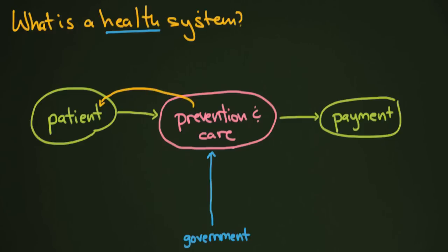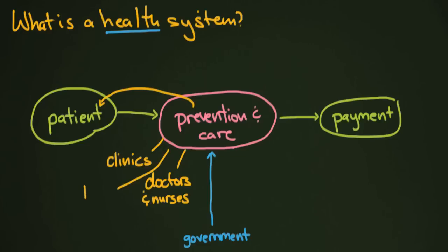Obviously you have doctors, clinics, and hospitals — you've always had those, so I'll include those as well. Doctors and nurses are obviously very important people in that. In some societies, you also have healers who are, through various programs, being integrated into health care systems as well, although that's a very touchy topic we might discuss later. As part of this whole prevention and care network, a lot of companies have come out and started selling services — pharmaceutical companies are a big one.